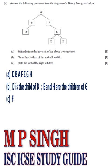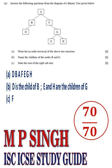Part 2 answers: A, D B A F E G H. B, D is the child of B. E and H are the children of G. C, answer F.